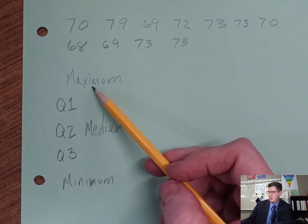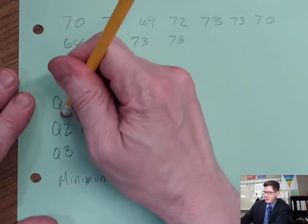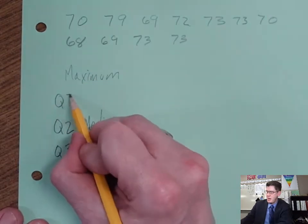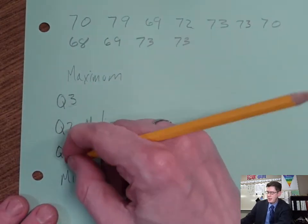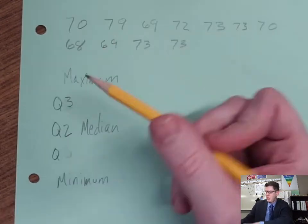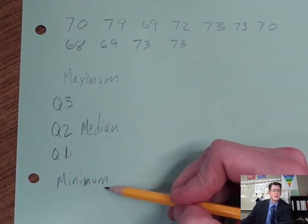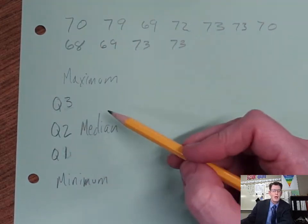I've written these backwards because the maximum is the highest, quarter three is the biggest, and quarter one is the lowest. The minimum is where we start. To find these values we first of all have to put these numbers in order.